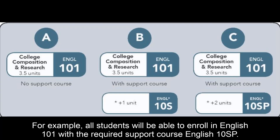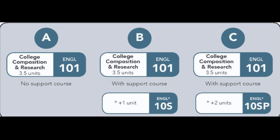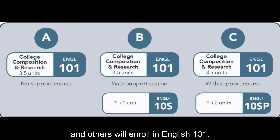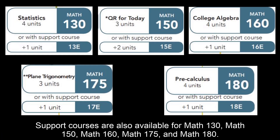For example, all students will be able to enroll in English 101 with the required support course English 10SP. Some students will enroll in English 101 with the required support course English 10S, and others will enroll in English 101 without a support course. Support courses are also available for Math 130, Math 150, Math 160, Math 175, and Math 180.